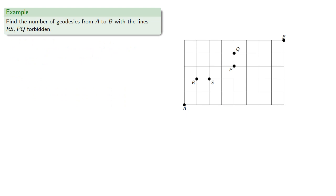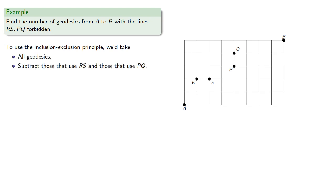For example, if we have two excluded paths, to use the inclusion-exclusion principle, we take all geodesics, subtract those that use RS and those that use PQ, and then add back those that use both RS and PQ.